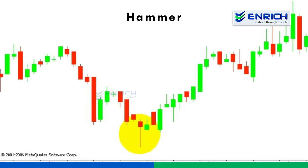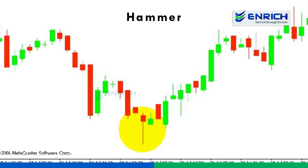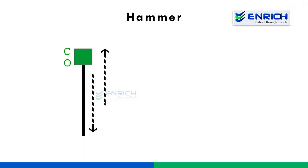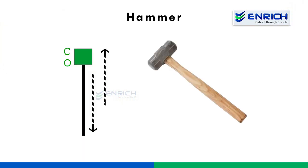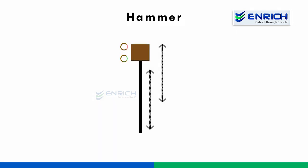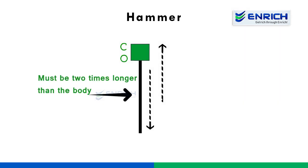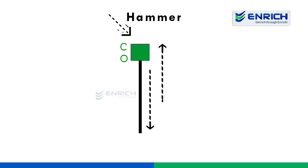Let's look at the hammer. Hammer is a bullish reversal pattern which can be seen after a downtrend. It's made of one candle and looks like a hammer. The body can be green or red and is smaller than the size of the wick or shadow. The shadow or wick must be at least two times the size of the candle's body. Usually there's no shadow above the body of the candle, but sometimes you may find a small shadow in a real trading platform.